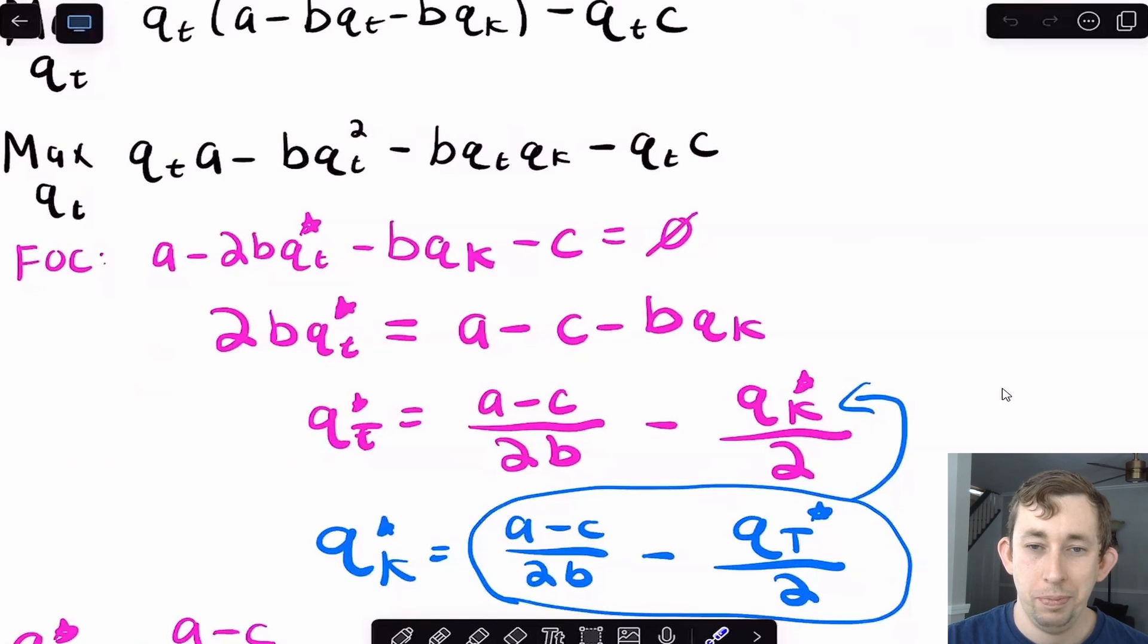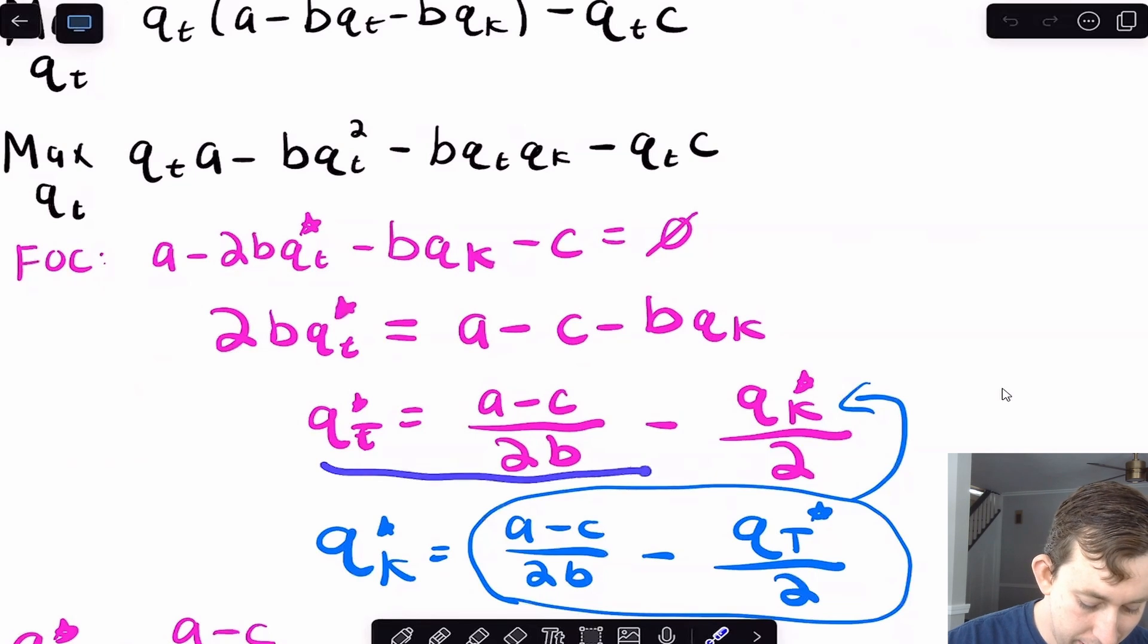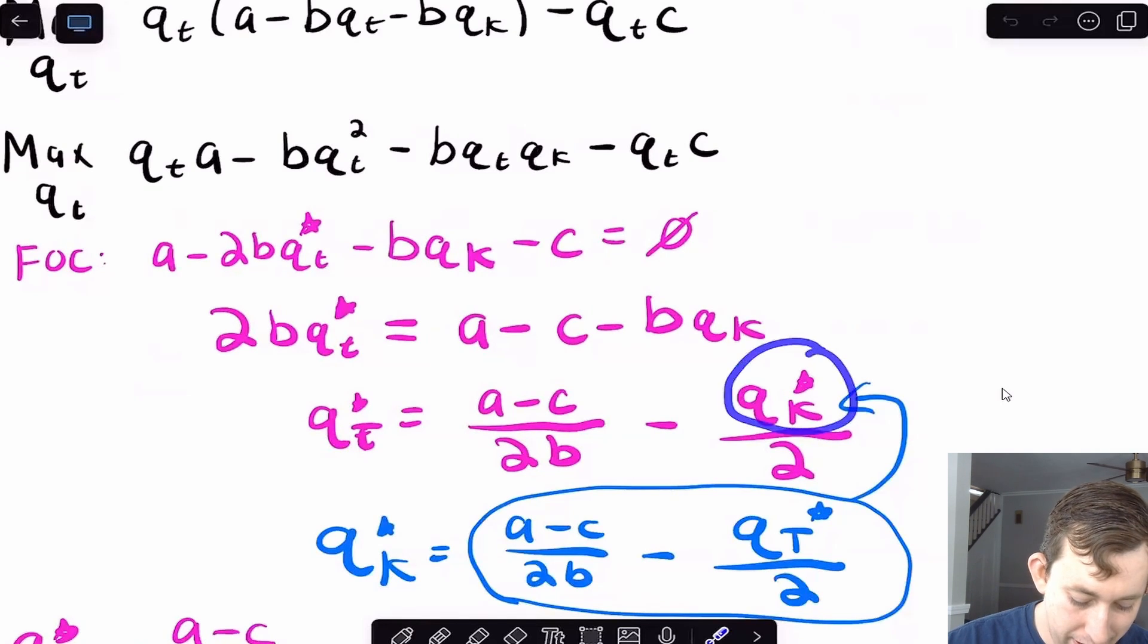Now, because this is a symmetric problem, they both have the same cost, they both face the same prices, you can see and you can do this if you set this up the same way for Kristen, but I'm just going to sort of talk intuitively through this. You can tell that if this is what Tina's optimal quantity is going to be, it makes sense that this should also be Kristen's optimal quantity. The only difference being that this is qt or the other side of the street's quantity, which is very similar to how we have qk here. This is useful because I'm just going to plug this whole equation in for qk star right here. And then I'm going to be able to solve for qt star without qk in it.